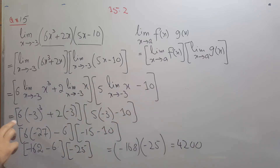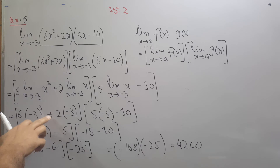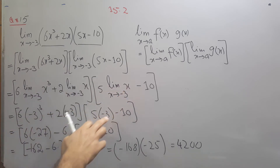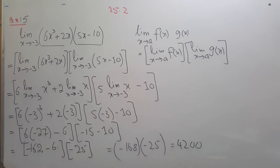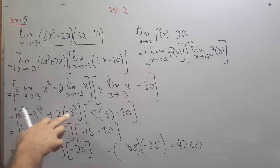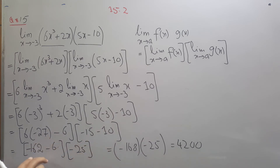Applying the limiting value x equals minus 3: 6 times (minus 3) cubed plus 2 times (minus 3) for the first function; 5 times (minus 3) minus 10 for the second. That gives 6 times (minus 27) equals minus 162, plus 2 times (minus 3) equals minus 6, so first part equals minus 168. Second part: 5 times (minus 3) is minus 15, minus 10 gives minus 25. Multiplying: minus 168 times minus 25.